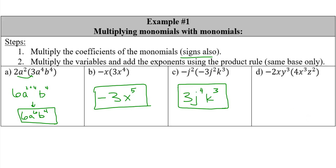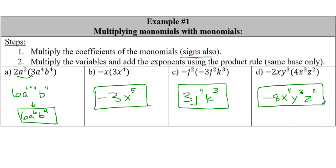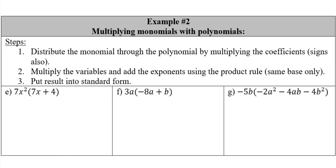Go ahead and pause the video, try the next one on your own. Welcome back. Hopefully you got something like this. Remember we do have the commutative property, so if you had the variables in a different order that is okay. Traditionally we leave the coefficient on the left. Hopefully we are okay with monomial times a monomial.